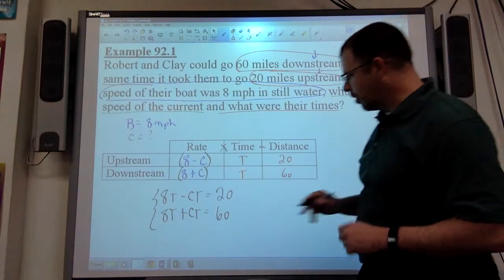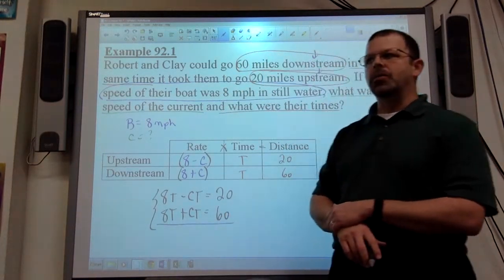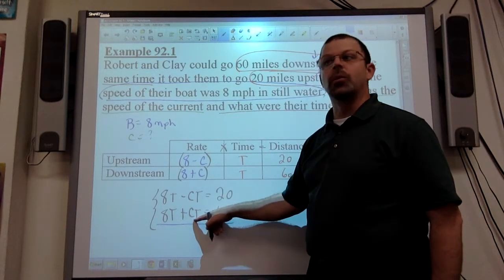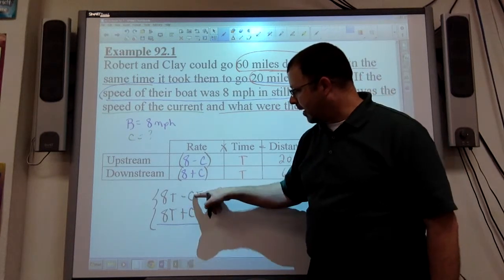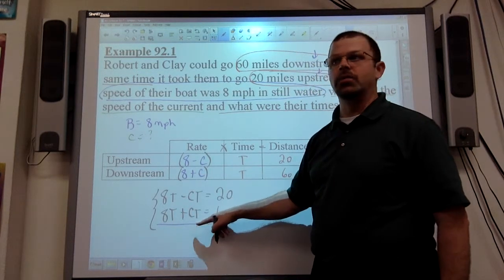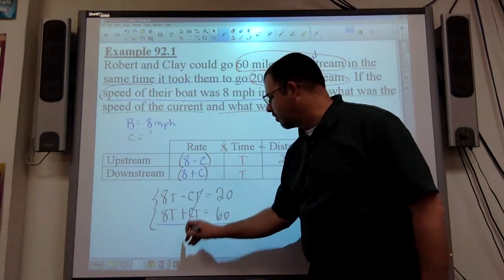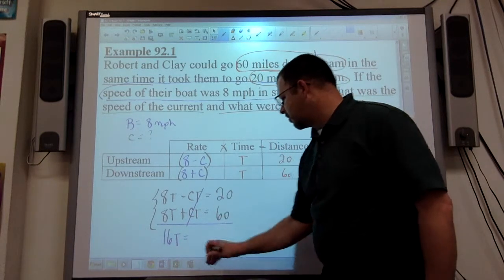Whenever elimination is legal, it's worth doing it that way. If you recall from those problems, the one with more variables than it's the one to get rid of, even if it's not set up well to do that. So this one, it does happen that CT is the one ready to go, so we're good. So minus CT and plus CT cancel. 8T plus 8T is 16T. 20 plus 60 is 80.